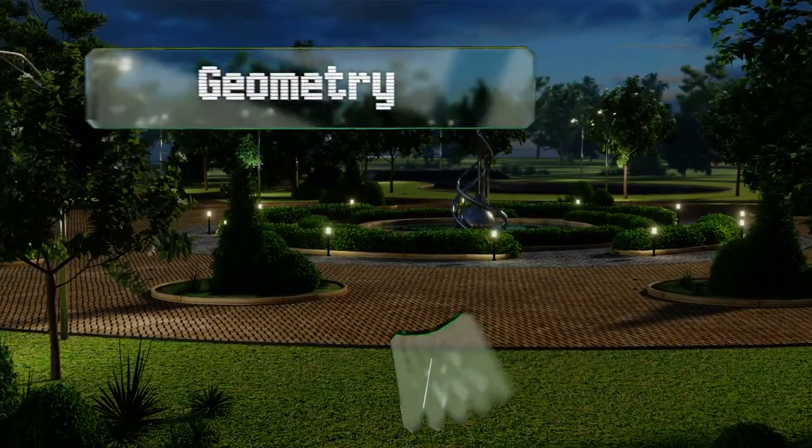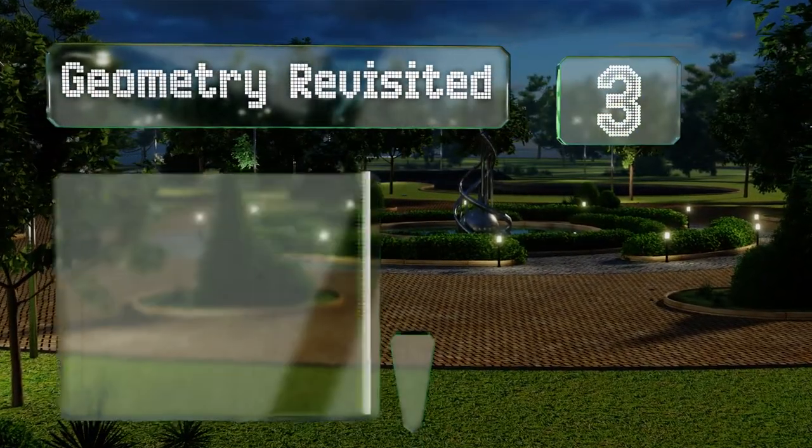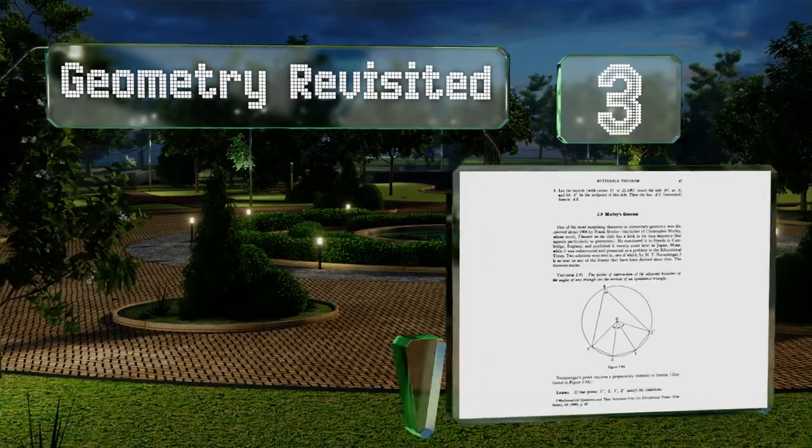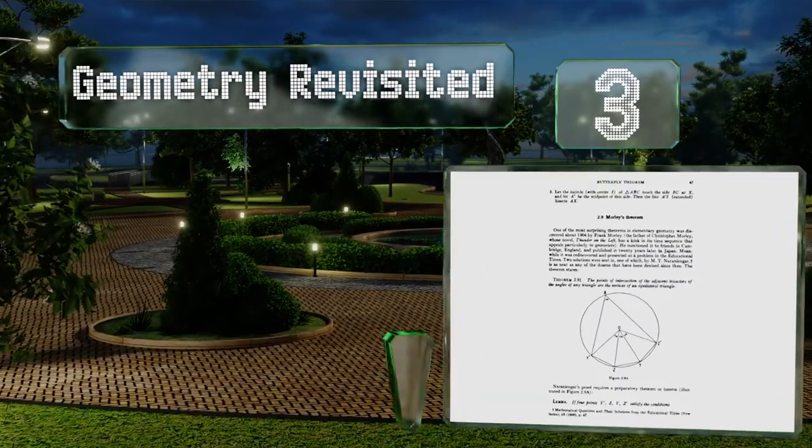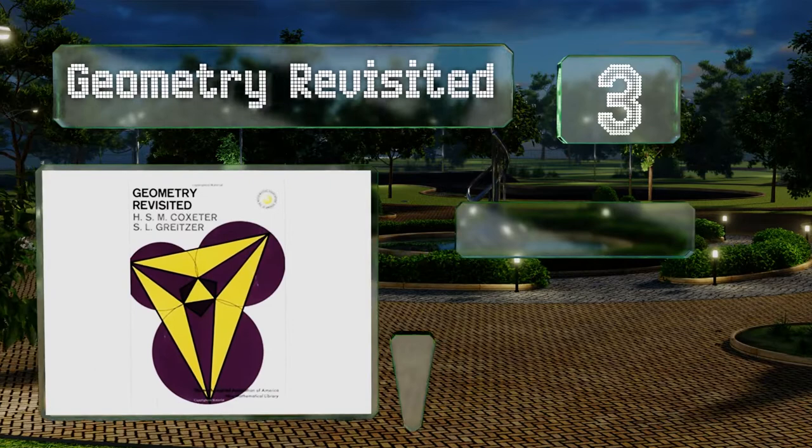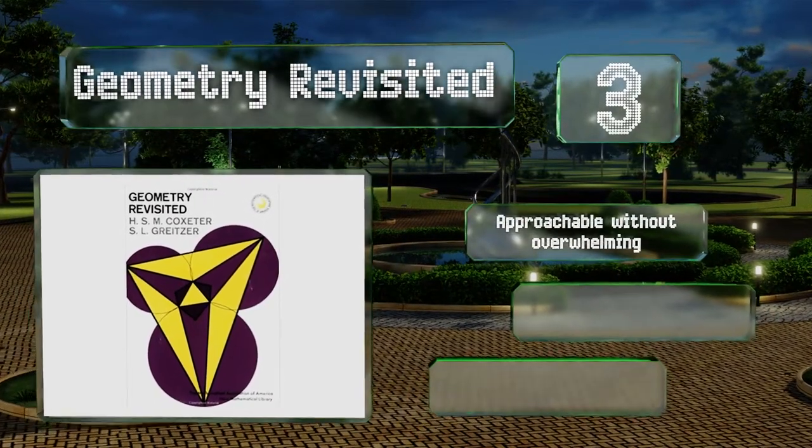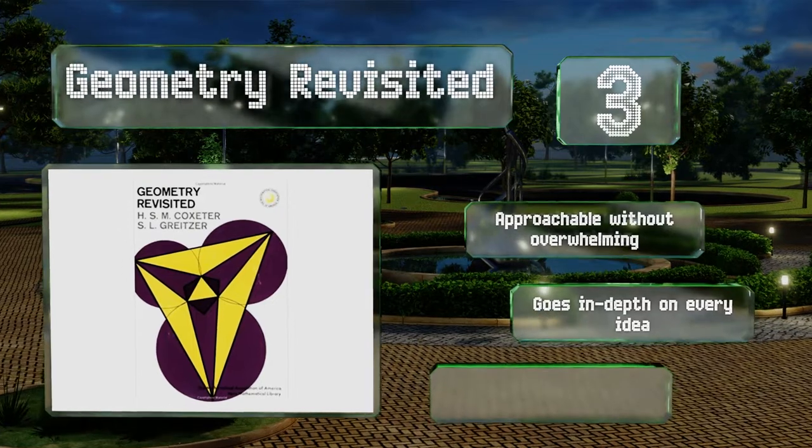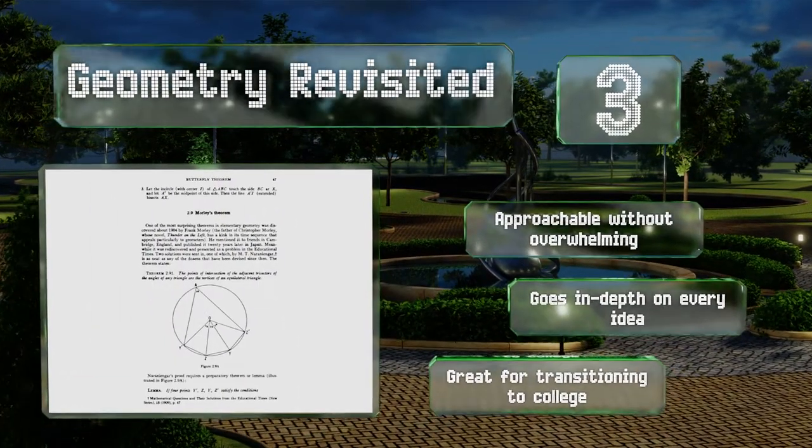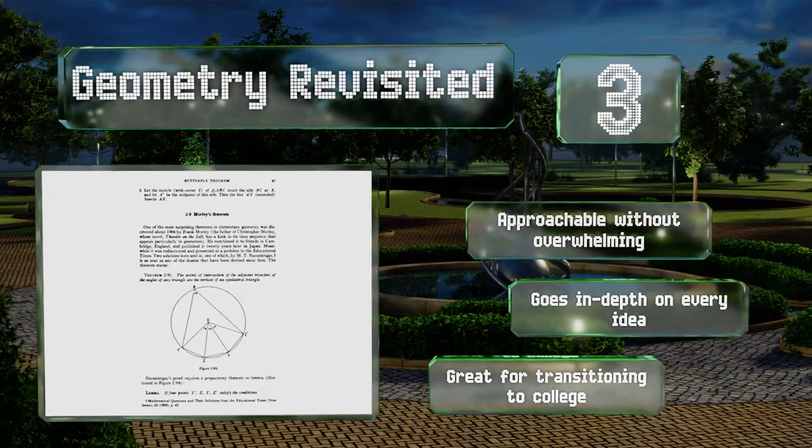Nearing the top of our list at number three, serious pupils looking to get involved in competitive mathematics will want to have a copy of Geometry Revisited on their bookshelves. This text assumes a working knowledge of the material but ensures that the concepts are thoroughly understood at a high level. It's approachable without being overwhelming and goes in-depth on every idea. It's great for transitioning to college.